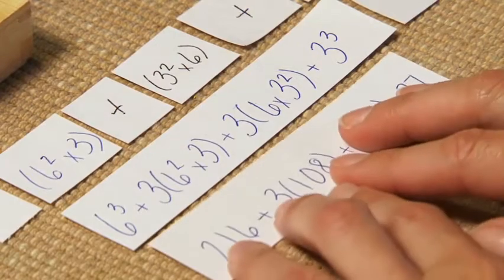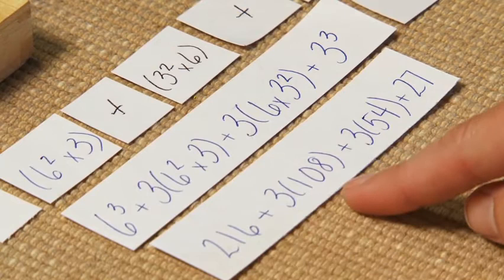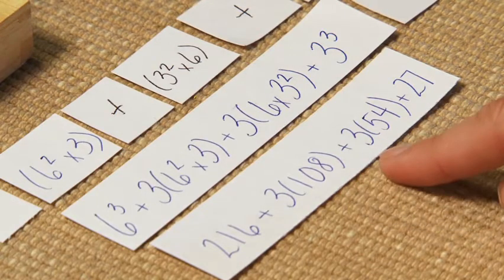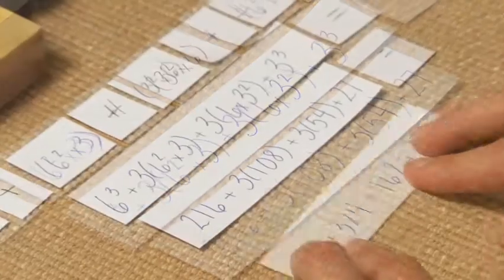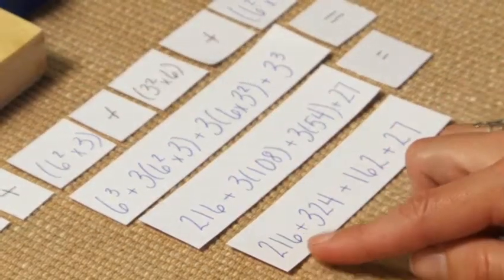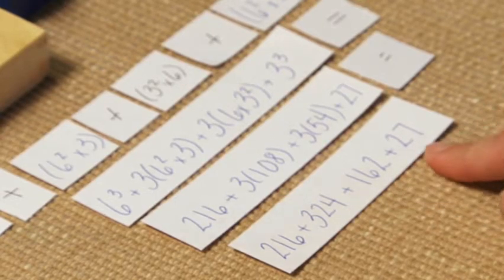Next we would be reducing these terms again. We have 216 plus 3 times 108, plus 3 times 54, plus 27. That's going to equal 216 plus 324, plus 162, plus 27.